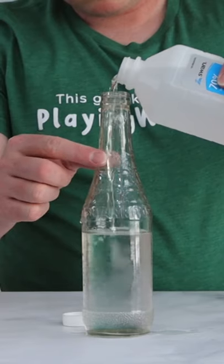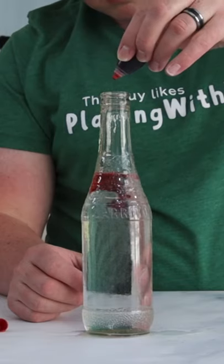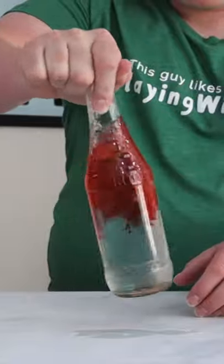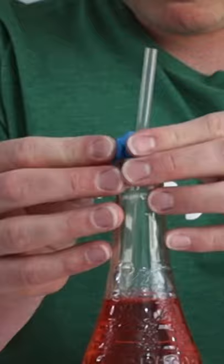Then add about the same amount of rubbing alcohol to make the bottle two-thirds of the way full. Add a few drops of red food coloring and give the bottle a little twist to mix it up. Then stick a straw into the top of the bottle and make an airtight seal with some modeling clay.